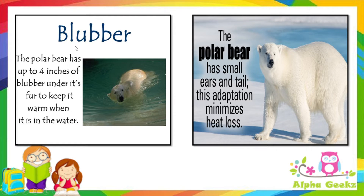The polar bear has up to four inches of blubber under its fur to keep it warm when it is in the water. Blubber is the thick insulating layer of fat present underneath the skin and is an important adaptation of marine mammals. The polar bear also has small ears and tail — this adaptation minimizes heat loss and does not allow cold water to enter the ears.